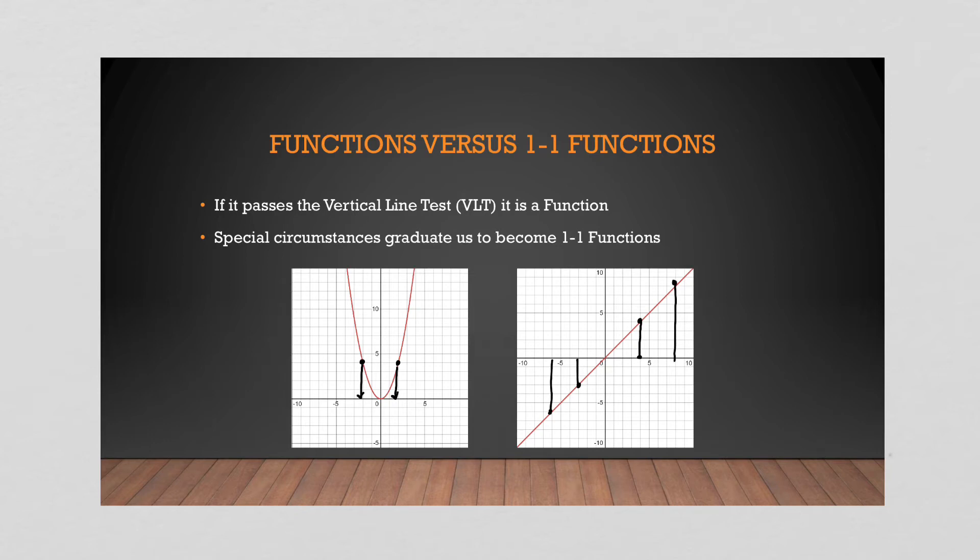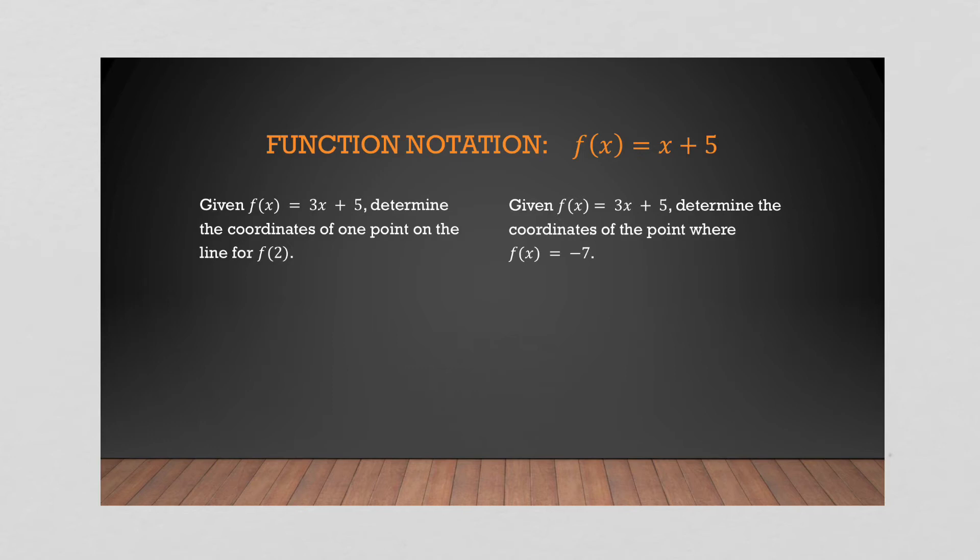So that's relation, function, one to one function. Do you pass the vertical line test? Do you pass the horizontal line test? So now the next thing we're going to look at is function notation. So this is an example here of function notation. Now, if you haven't seen this yet, don't freak out because really it's just y equals x plus five. What we do is we replace the value y with the value what we call f of x. It's pronounced f of x. It's the equation of my function with respect to x.